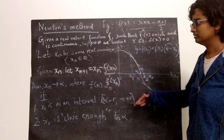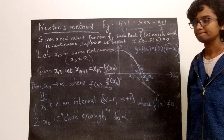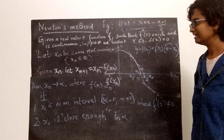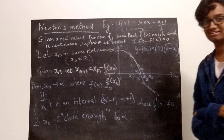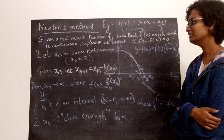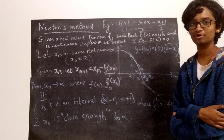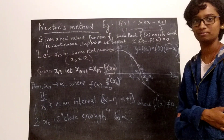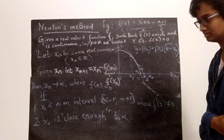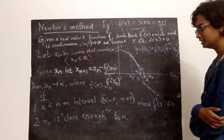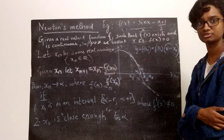We are going to look at a method to find the zeros of such a function. If f is a quadratic polynomial, there is an easy formula — the quadratic formula — which gives you either two real roots, one real root, or two complex roots.